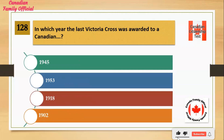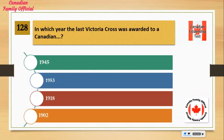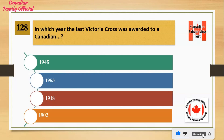In which year was the last Victoria Cross awarded to a Canadian? Number 1: 1945. Number 2: 1953. Number 3: 1918. Number 4: 1902. And the answer is 1945.